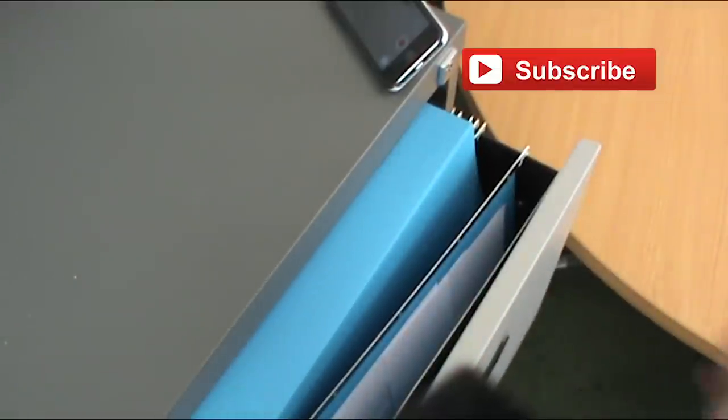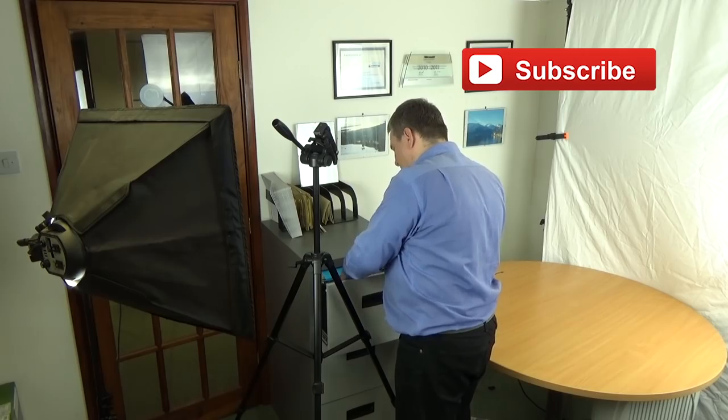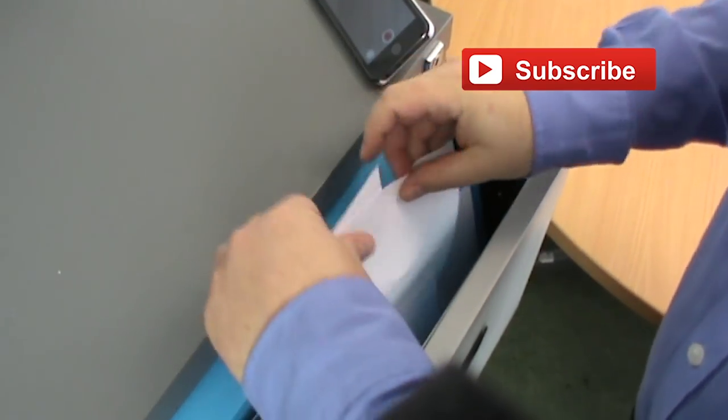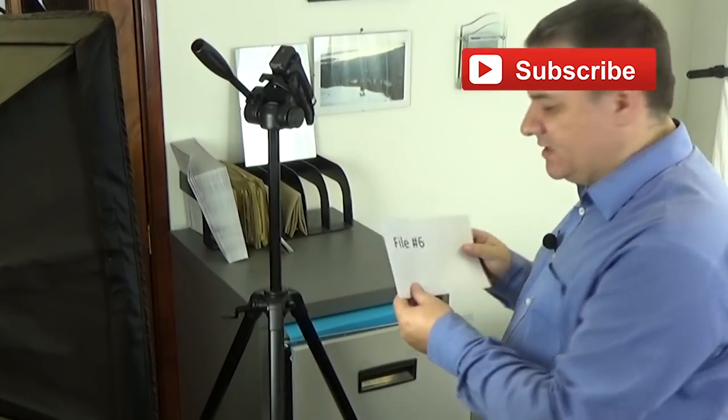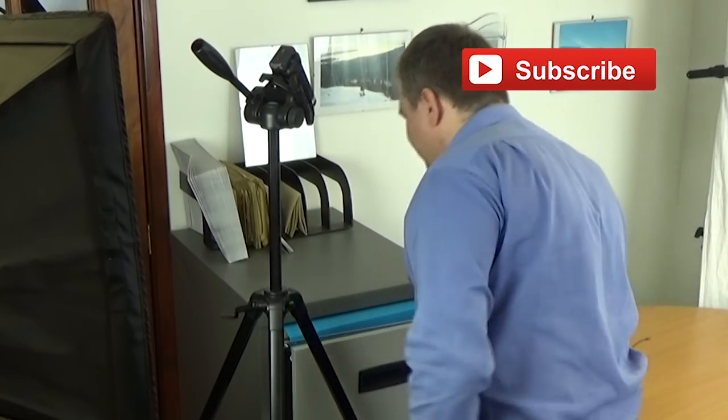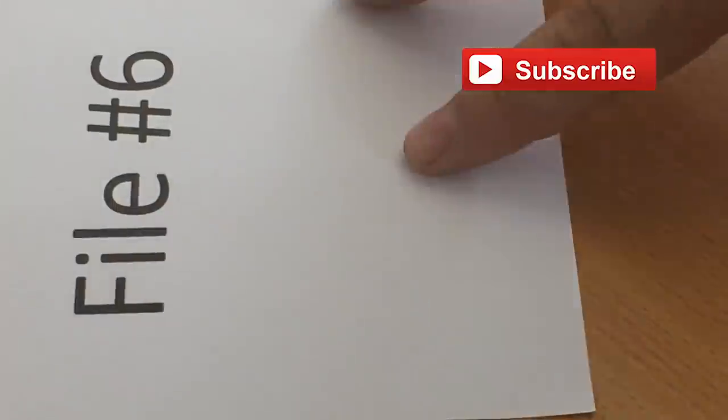So what happens is, you ask for a file. So the processing unit goes to the hard drive, and it pulls out the file that you want, in this case, file number six, and it places it in the memory, like so. We're already almost completely full, because this is quite a big file, as you can see.